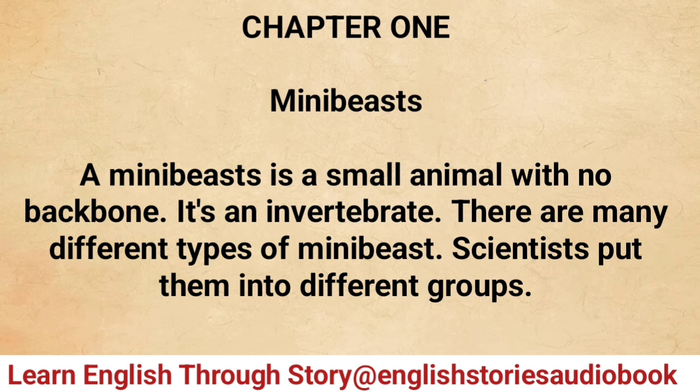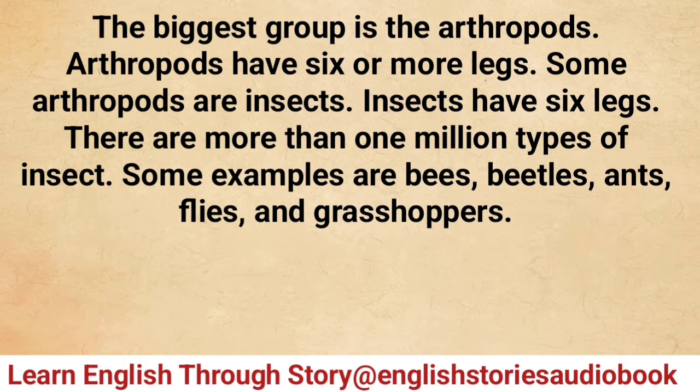Chapter one: Mini beasts. A mini beast is a small animal with no backbone — it's an invertebrate. There are many different types of mini beast. Scientists put them into different groups. The biggest group is the arthropods — arthropods have six or more legs.